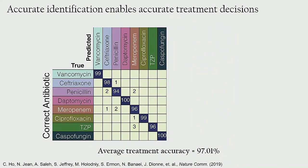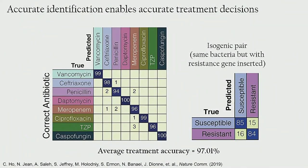What matters to a doctor is the first choice antibiotic treatment. If we look at what the antibiotic treatment groups would be, our average treatment accuracy is 97%, which is better than many clinical assays that would be used. For the genetically modified pairs that brought down our accuracy somewhat, we're still in the 80th percentile, and it's quite promising that we can insert a resistance gene into a bacterium and detect differences — very exciting for understanding how bacteria might be evolving resistance.